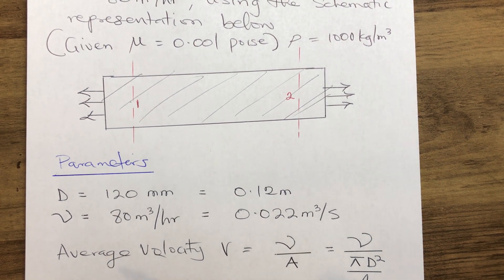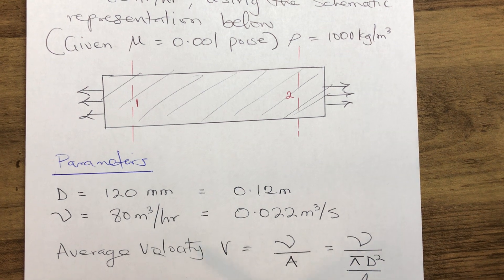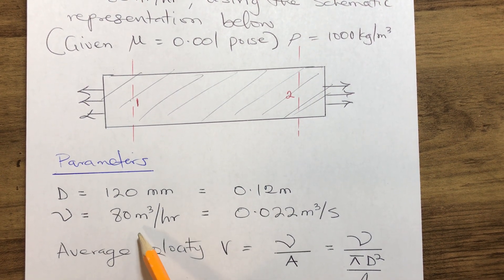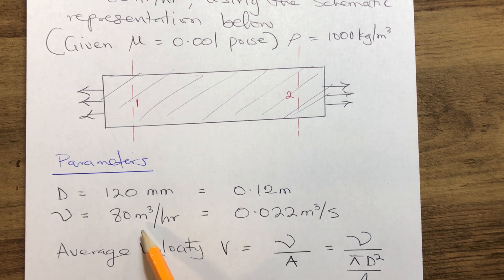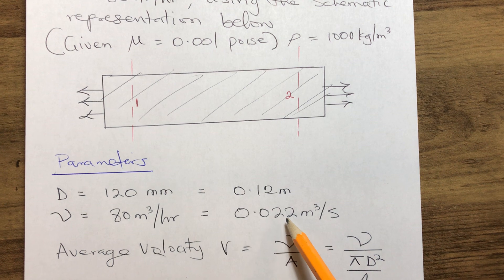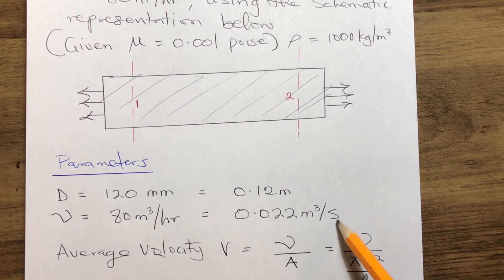We have the flow rate: Q = 80 m³/hr = 0.022 m³/s by conversion.